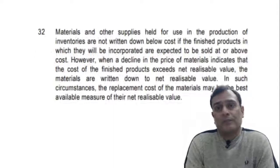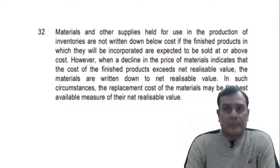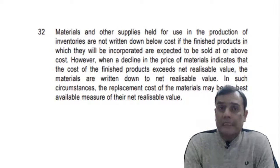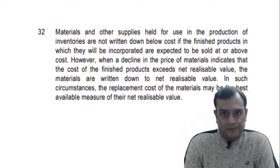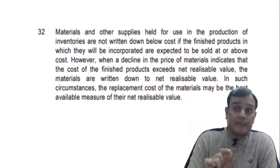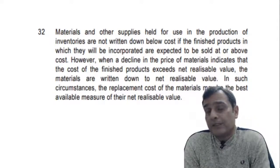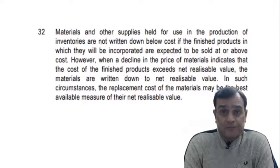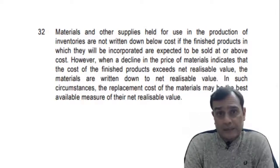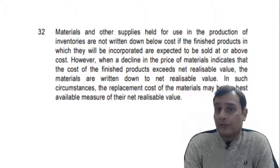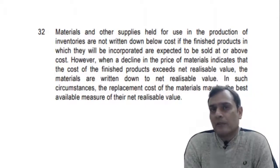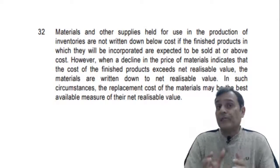However, we need to look into Para 32 as well. Para 32 provides specific guidance on material valuation. It says that materials and other supplies held for use in the production of inventory are not written down below cost if the finished products in which they are incorporated are expected to be sold at or above cost. This indirectly means the measurement of raw material is dependent upon the valuation of the finished goods.